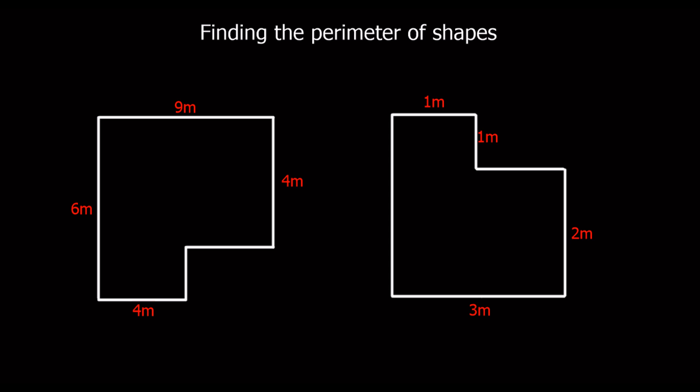Okay, these shapes are called compound shapes. What they are is shapes made up of different shapes. Finding the perimeter is the same, but what you'll find a lot of the time is there's missing lengths that you've got to work out first.